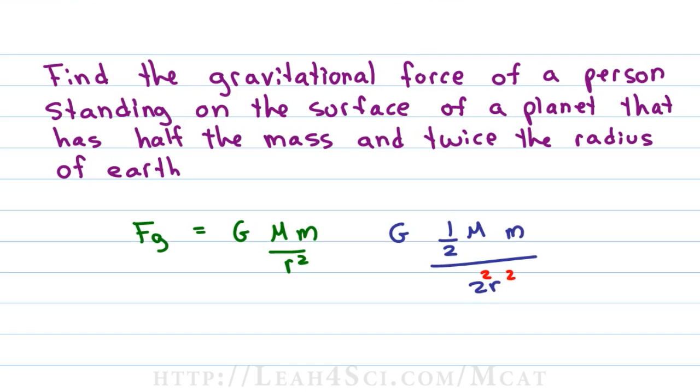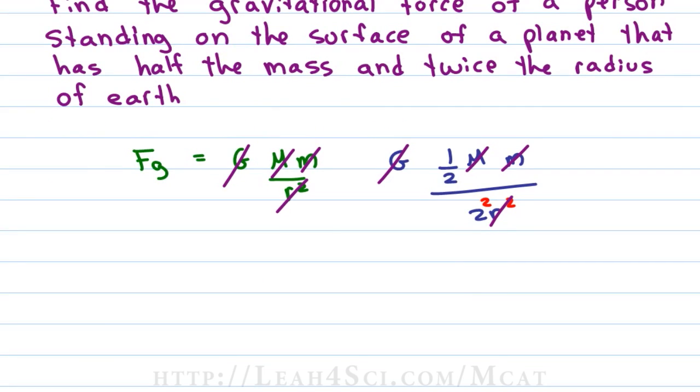So what does that give us? Let's cancel out all the constants or the values that change the same. The little m's drop out, big M's drop out, g drops out, the r squared drops out and we're left with a proportionality of 1 times the force of gravity compared to